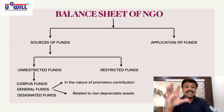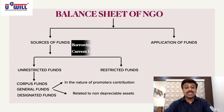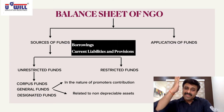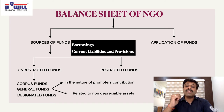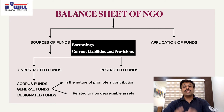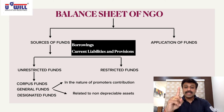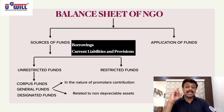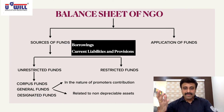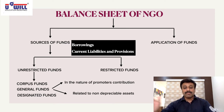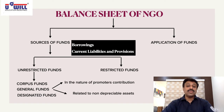Within sources of funds, there are four things: unrestricted funds, restricted funds, borrowings, and current liabilities and provisions. Borrowings are like loans (secured and unsecured); current liabilities and provisions include outstanding expenses, pre-received incomes, creditors, etc. Within unrestricted funds: corpus fund, general fund, and designated fund. Within general fund: in the nature of promoters' contribution, and related to non-depreciable assets. Application of funds means assets.